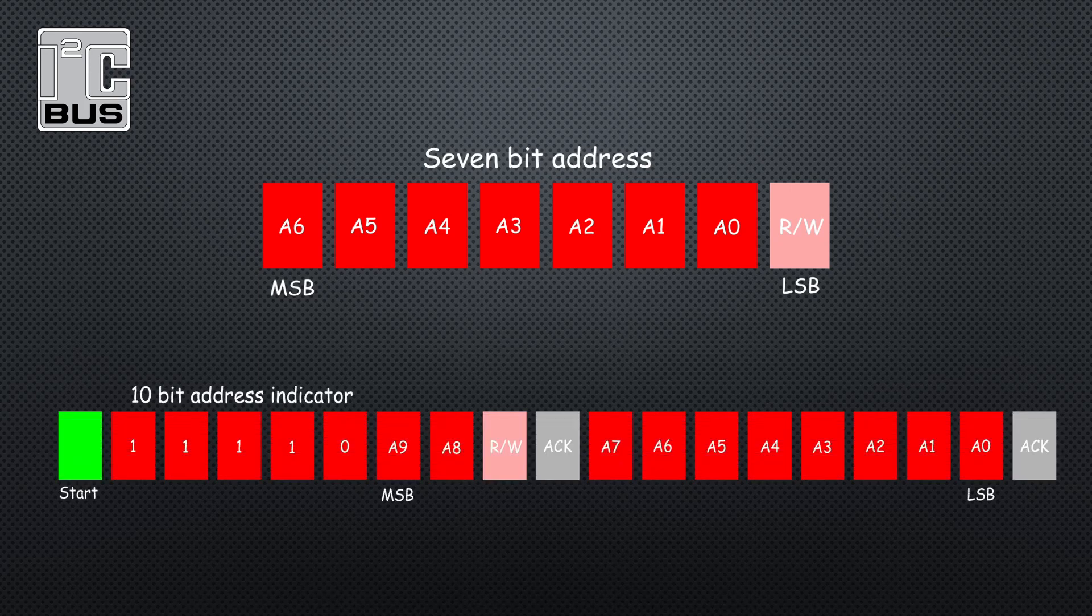10-bit addressing uses two frames to transmit the slave address. The first frame starts with a reserved address that starts with four ones and a zero, followed by the two most significant bits of the 10-bit address. The eighth bit of the first byte is the read/write flag. The full eight bits of the next byte is used for the rest of the 10-bit address.